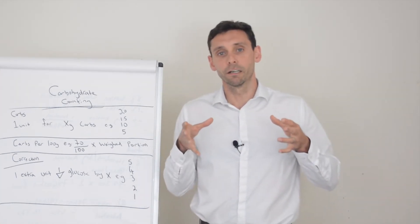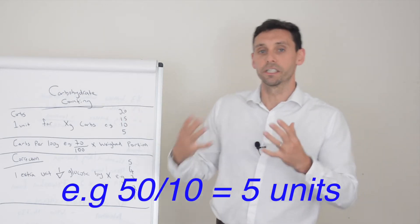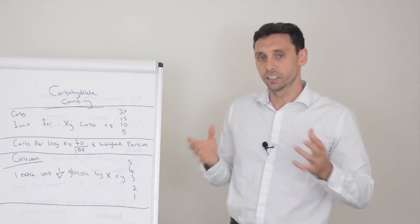Another way to do it is work out the amount of carbohydrates you have at your meal and then divide by this number here and that'll tell you how many units to take. So how do we work out the carbohydrates? There's a couple of different ways.